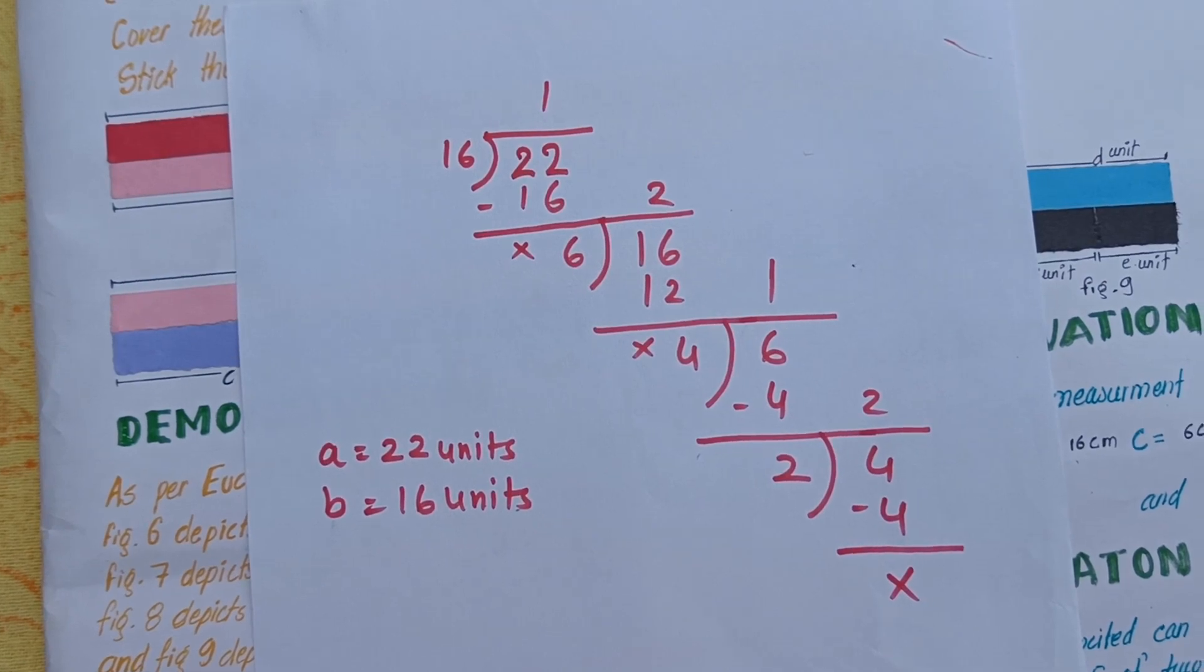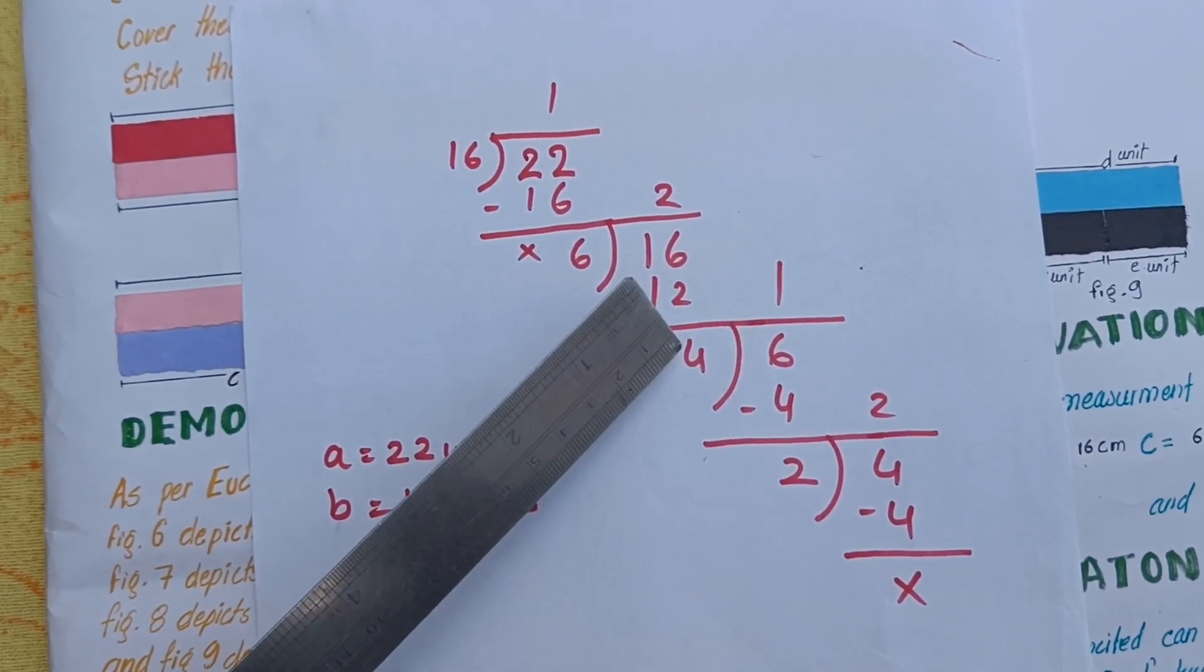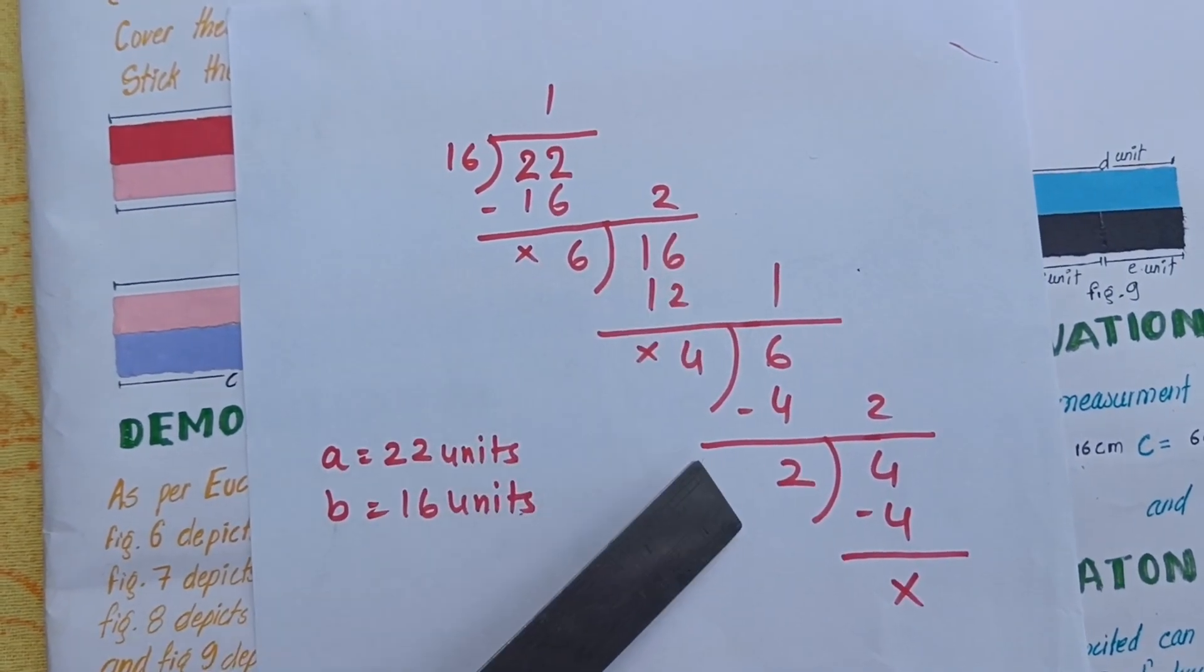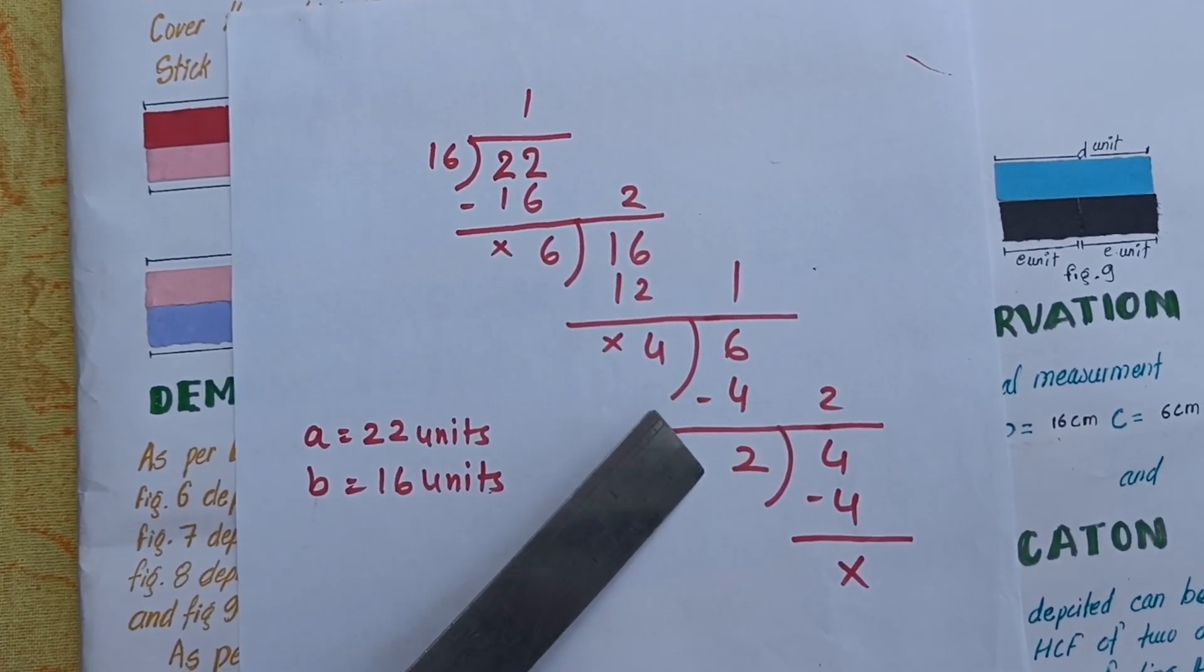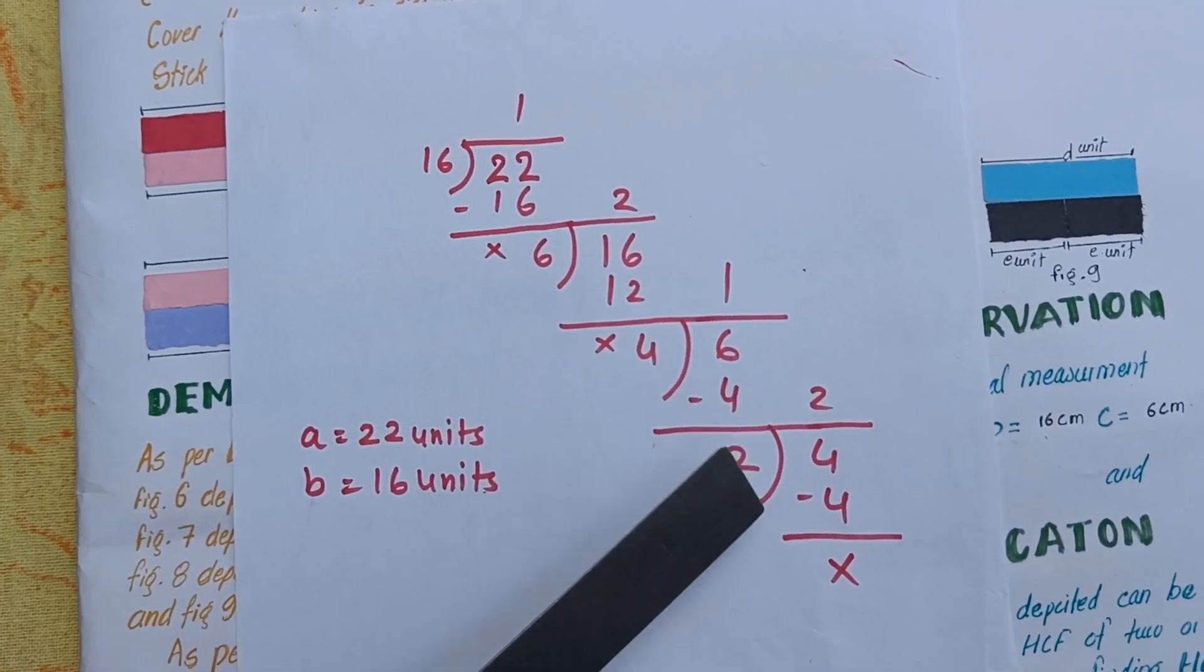In the third step, 6 divided by 4, the quotient is 1 and remainder is 2. In the last step, 4 divided by 2, the quotient is 2 and remainder is 0.